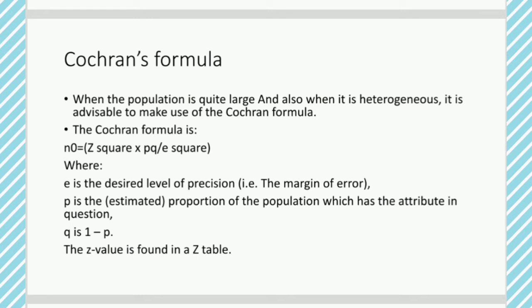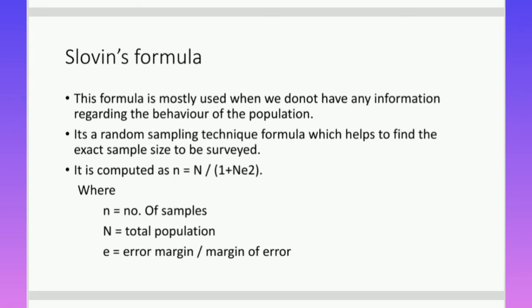That is, how much error you are able to accept. P is the proportion of population which has the attribute in question—obviously, P is the probability or proportion of population, and Q is 1 minus P. The Z² that is given in the formula is found in the Z table.